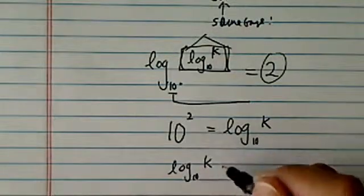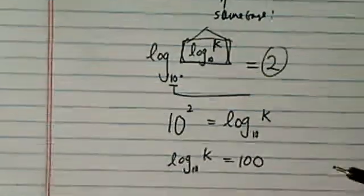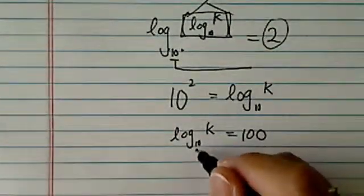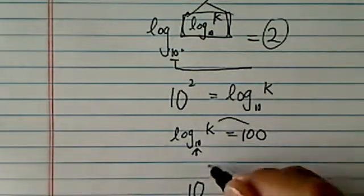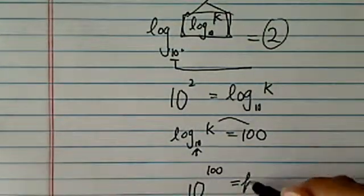So log base 10 of k is equal to 100. And then keep the same base again, which is 10. Swap those two. 100 is equal to k.